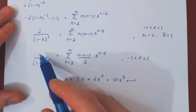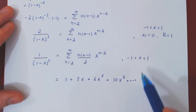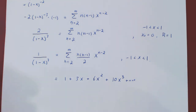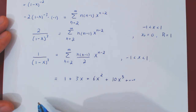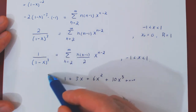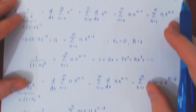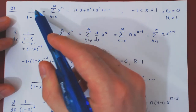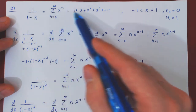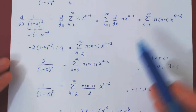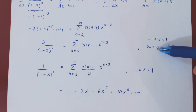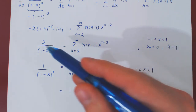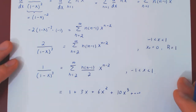We have expressed this simple rational function as a power series on the open interval from negative 1 to 1 using term-by-term differentiation. You could keep differentiating to express 1 over 1 minus x to the 4th as a power series, and so forth. Every time you differentiate a power series, the center stays the same and the radius of convergence stays the same, so this process works as many times as you want.